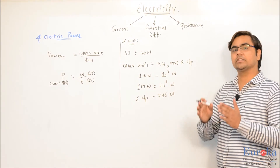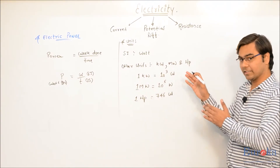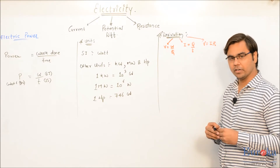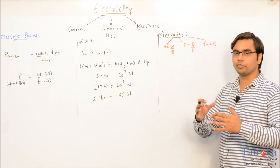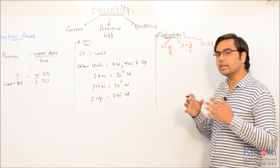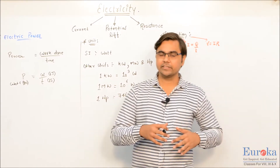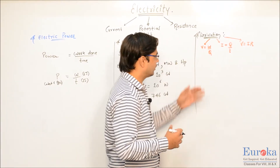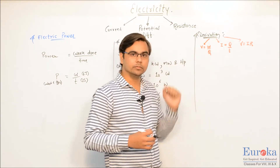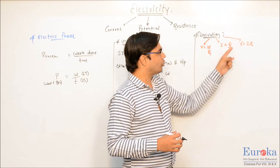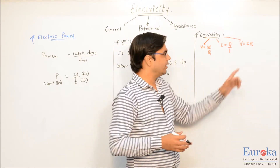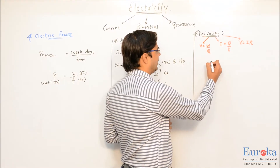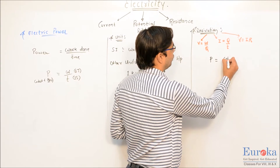Now that we have derived the general formula of power, let us also understand the formula in terms of electric quantities. There are certain formulas from the earlier part of the chapter that will help us: the formula for potential difference V equals W divided by Q, the formula for electric current I equals Q divided by T, and the formula for potential difference V equals I times R as per Ohm's law. As we understood, power can be expressed as work done divided by time.